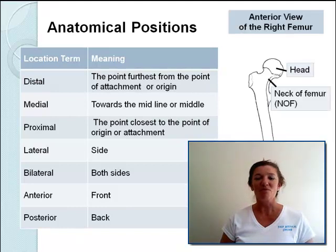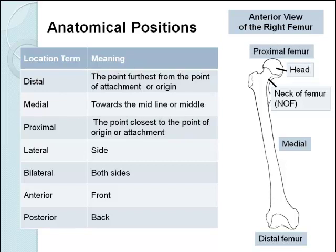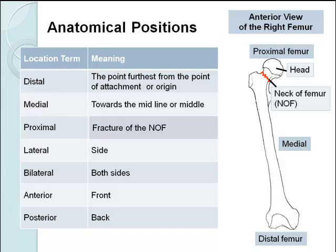Here we have the anterior view of the right femur — the front view. The part at the top is known as the head, and you can see the neck of the femur on the diagram. The distal region is down at the bottom, the furthest point from origin, so if the head is the beginning, the distal end is towards the knee. Medial would be towards the middle. The proximal femur is the top end. A fracture of the neck of the femur would be in the proximal part of the femur. The abbreviation for the neck of the femur is NOF. And lateral is the side.